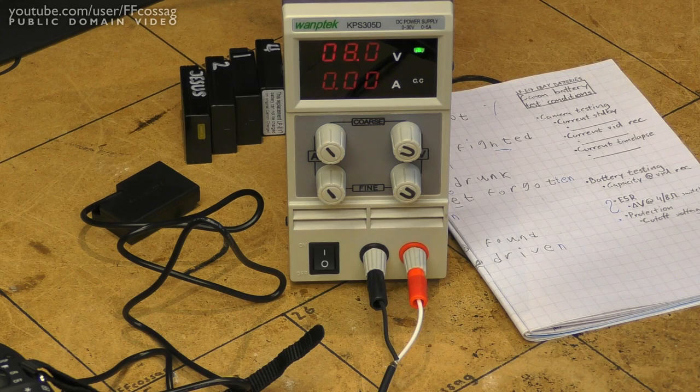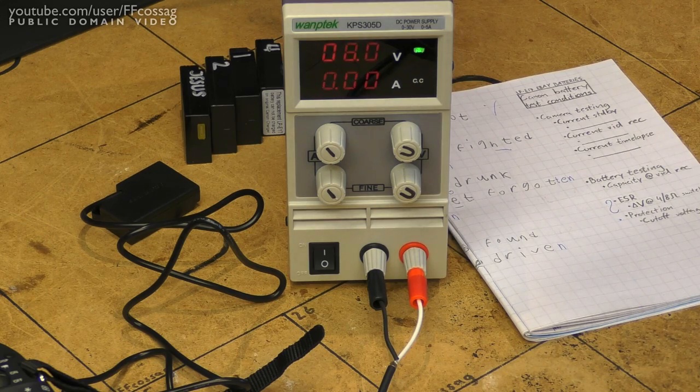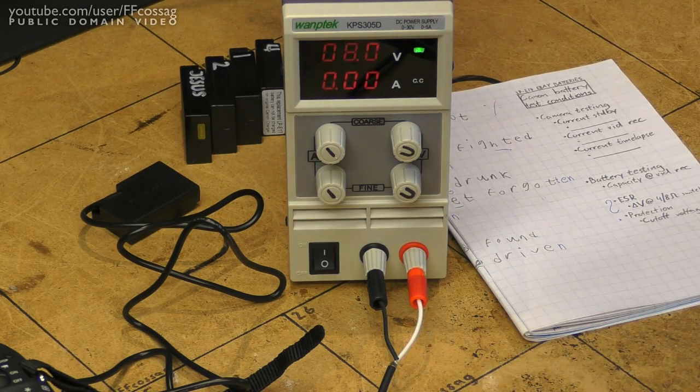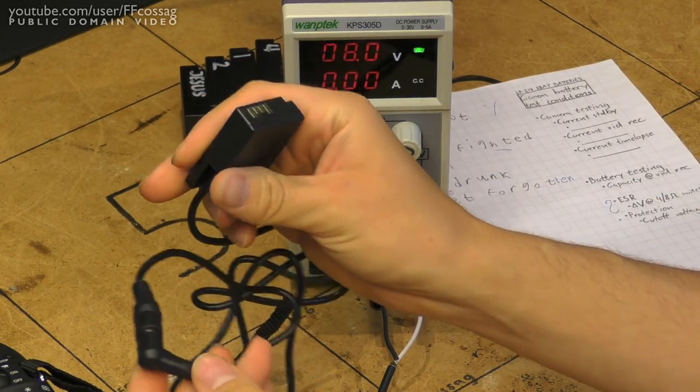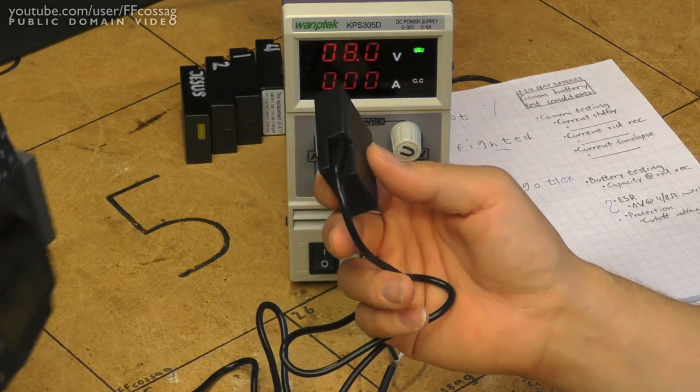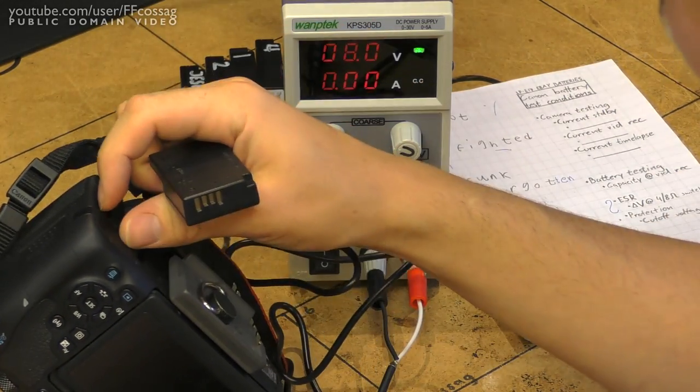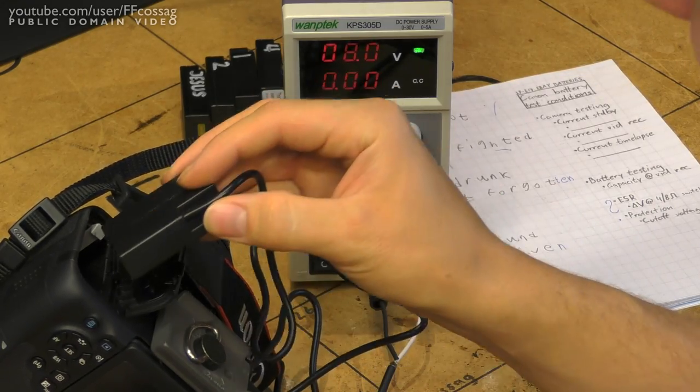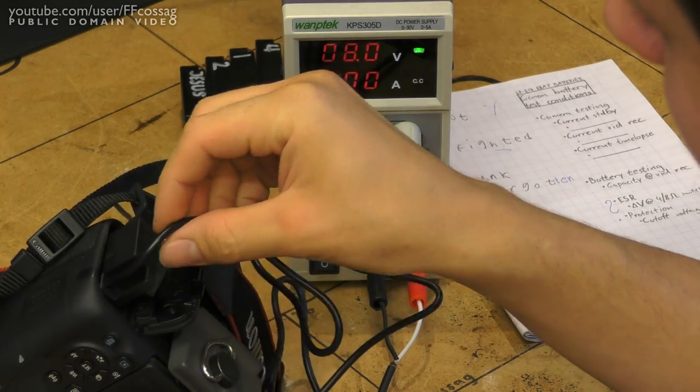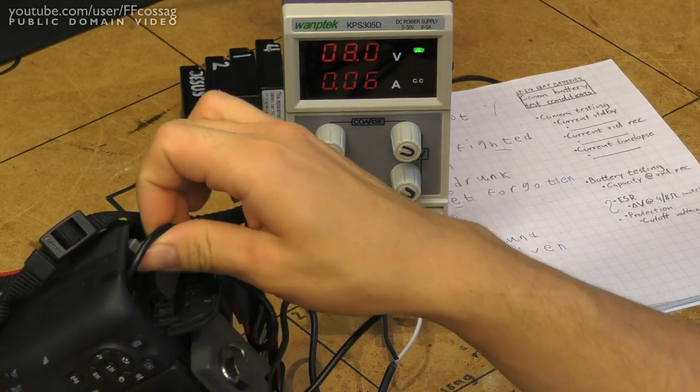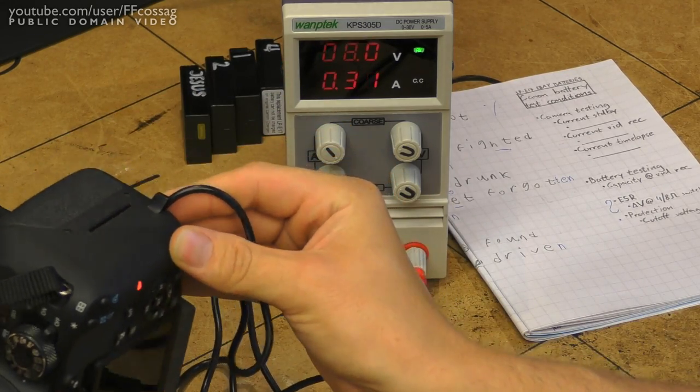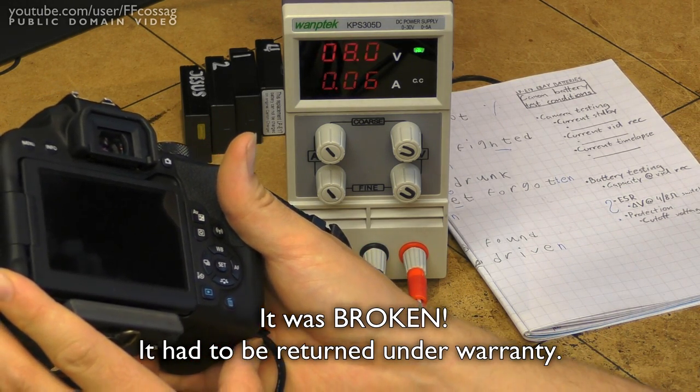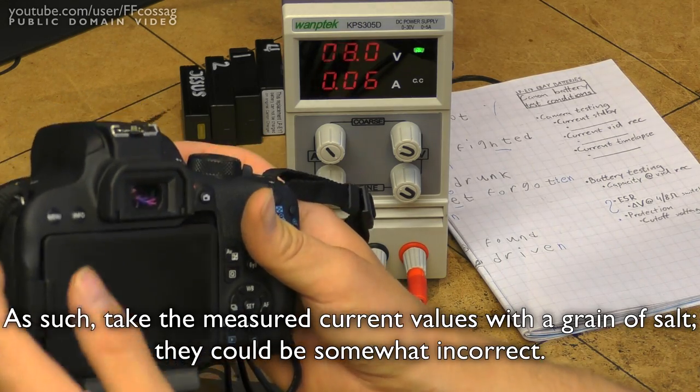Before we start to get into the batteries we need to establish a baseline for the power consumption of the camera. For that I have purchased this really cheap ACK E18 camera AC adapter. I've just wired this up to my bench power supply. Let's see how much current this camera draws. They are using 2 series lithium batteries by the way. 8V is correct, they're not 3.7V batteries. 60mA draw. Why is this camera drawing 60mA while powered off? That's insane. Probably just checking for power batteries, I'd wager.